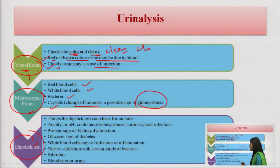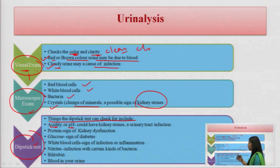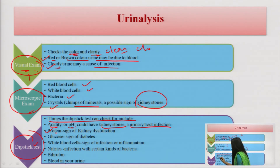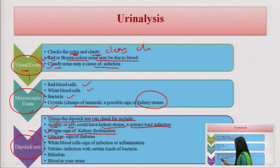The dipstick test is very popular. A thin plastic strip treated with chemicals is dipped into the urine sample, and the resulting colors are interpreted. Parameters checked include: acidity and pH — low pH indicates kidney stones or urinary tract infection; and protein — if protein is detected, there is a problem with the filtration units (nephrons), indicating kidney dysfunction.